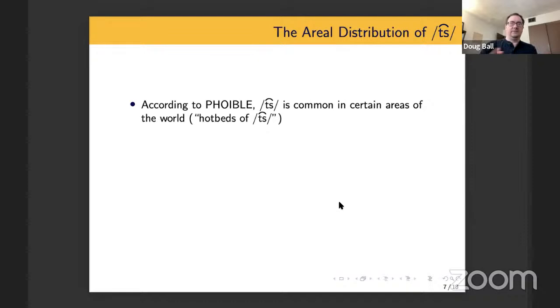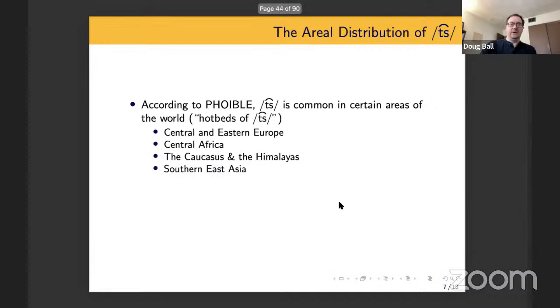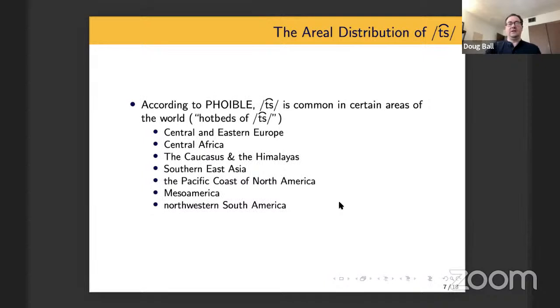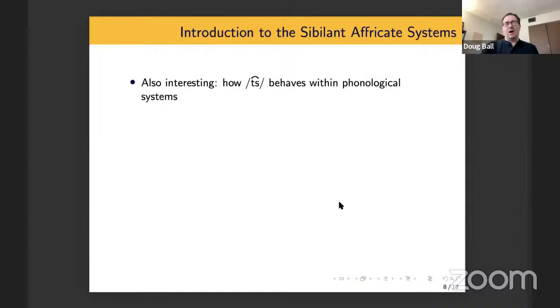Also from FOIBLE, you can see some indication of its geographical distribution and looking at the maps that FOIBLE can generate. It's clear that TS is common in certain areas of the world, what I will call hotbeds of TS. And so some of the hotbeds include Central and Western and Eastern Europe, Central Africa, the Caucasus and the Himalayas, two mountainous areas of Eurasia, Southern East Asia, which is basically China just north of what is Southeast Asia. The Pacific coast of North America is another hotbed, as is Mesoamerica, and finally Northwestern South America is another hotbed.